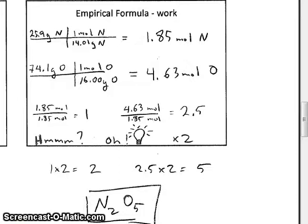So here's a look at the work for solving that empirical formula problem. We know that we have assumed a mass of 25.9 grams of nitrogen. One mole of nitrogen would be 14.01 grams. So this would allow us to calculate that there are 1.85 moles of nitrogen in our imaginary sample. Then we would use the mass of 74.1 grams of oxygen, converting that to moles using the molar mass of oxygen to calculate 4.63 moles of oxygen.